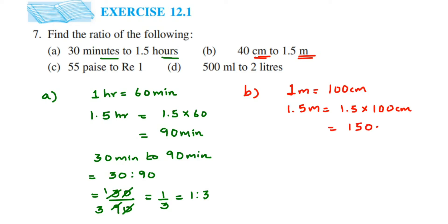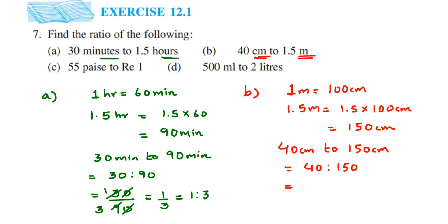Now find out the ratio. We have 40 centimeters to 150 centimeters. Writing in ratio form, this becomes 40 is to 150. Now we have to reduce it by converting to a fraction: 40 by 150. Cancel the zeros — we get 4 by 15. We cannot cancel this further, so the ratio will become 4 is to 15.